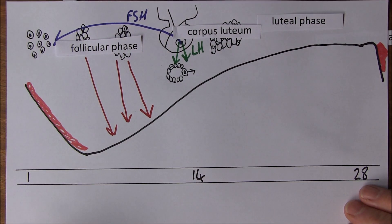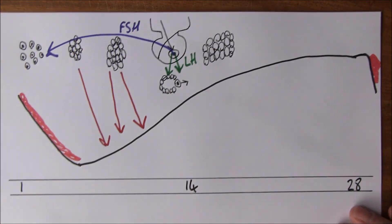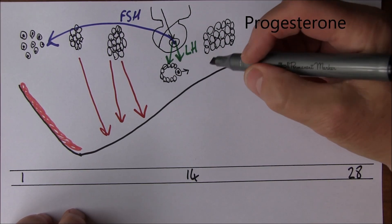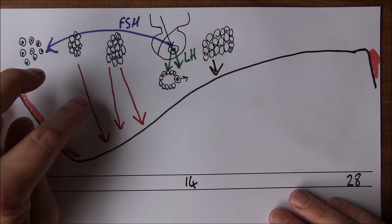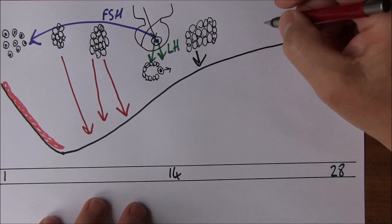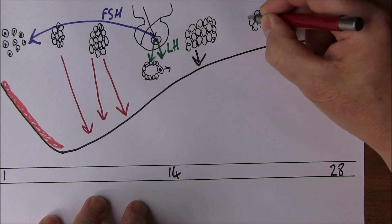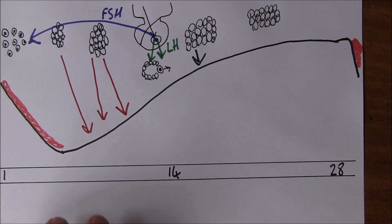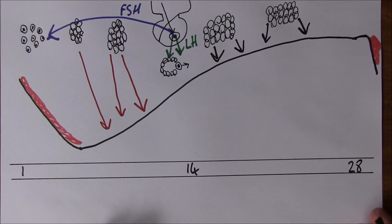The corpus luteum carries on producing some oestrogen, but it also produces large amounts of progesterone. The progesterone from the corpus luteum influences and maintains the endometrium. Oestrogen is a developing hormone; progesterone is a maintaining hormone. The corpus luteum stays around for the second 14 days of the cycle, producing progesterone to maintain the developed state of the functional layer of the endometrium.